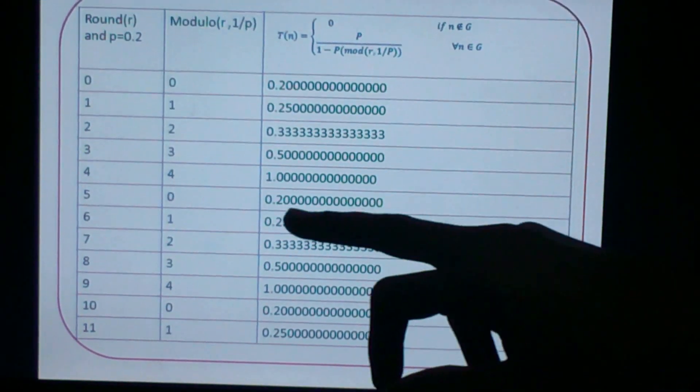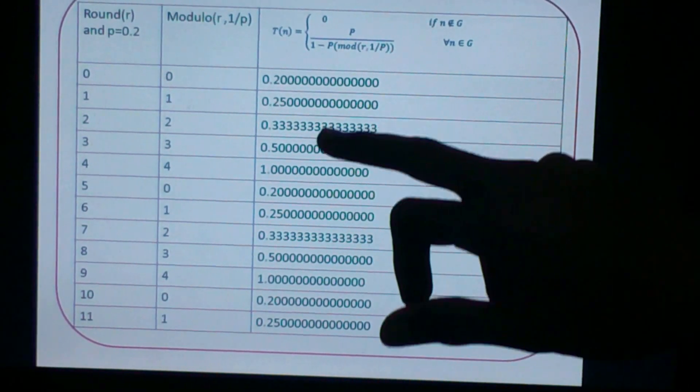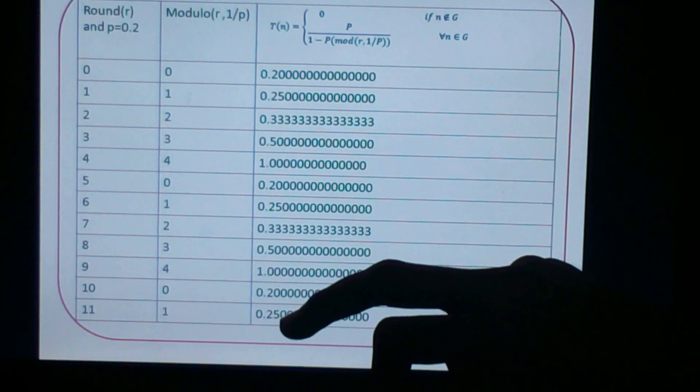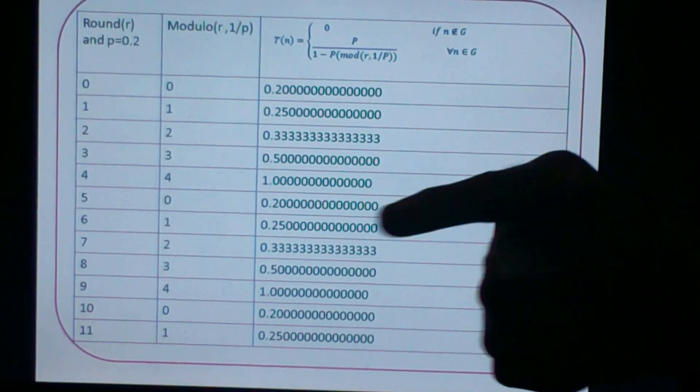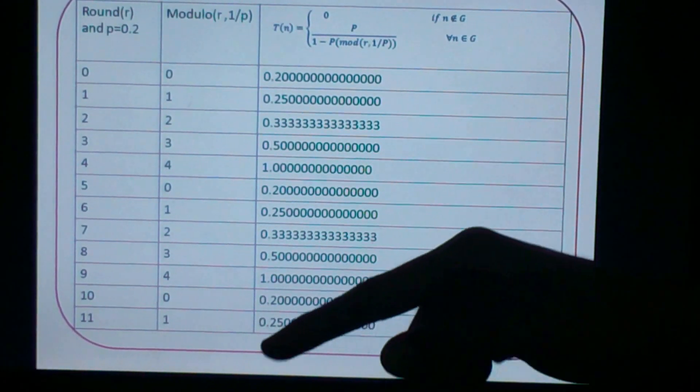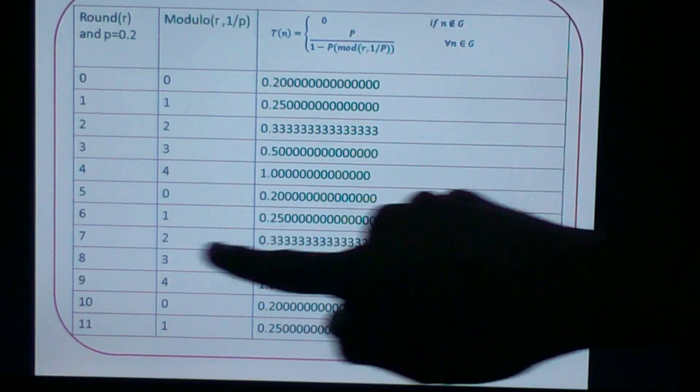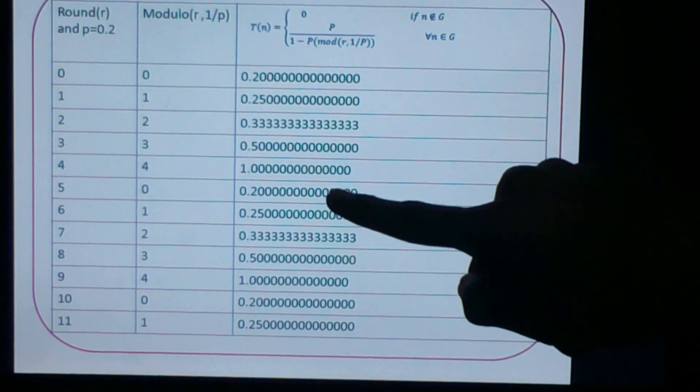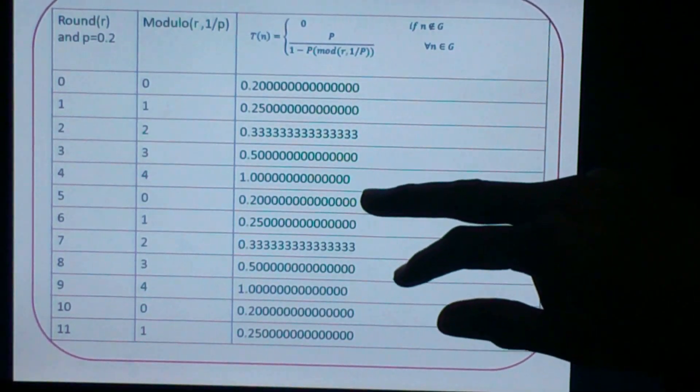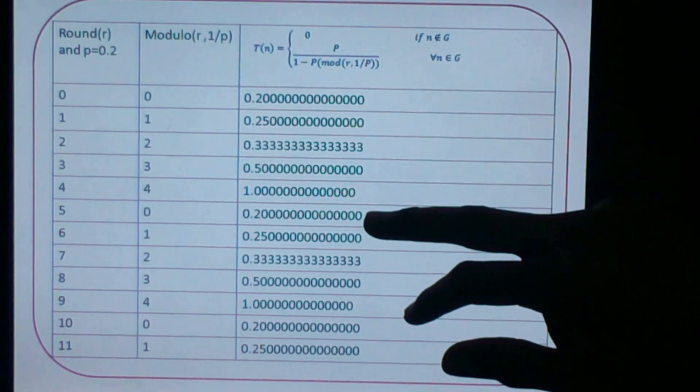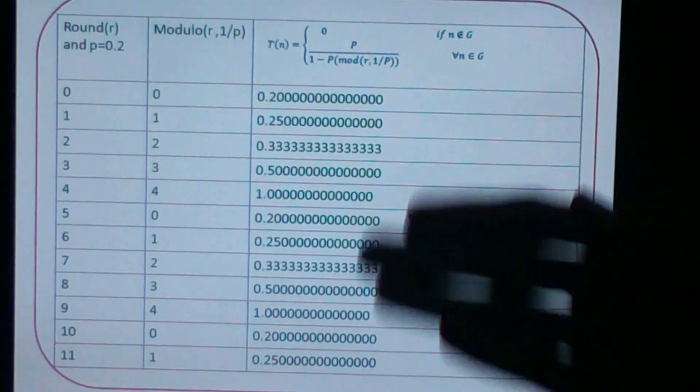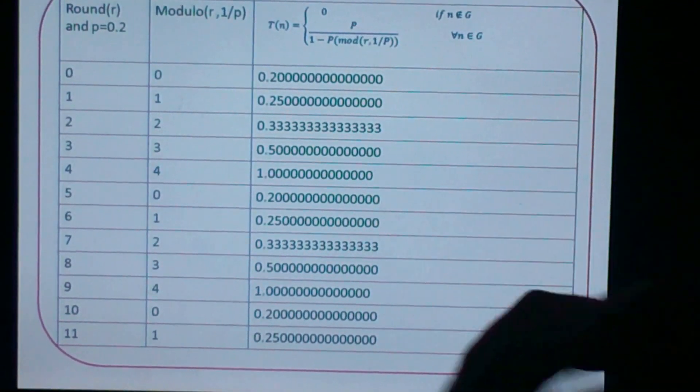Gradually, the thresholding function increases up to 1. In LEACH, if the node becomes the cluster head in one round, it will not be the candidate for the other round. So here we can say that after the 4th round, all the nodes become the candidate of cluster head and this process will be repeated after the 4th round.